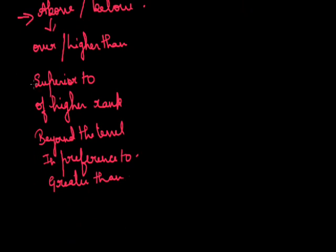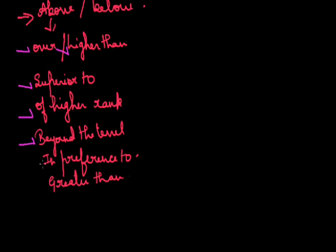For example, for superior to: 'Sudhir placed his country above his family ties' — meaning he gives more value to his country than his family. For higher rank: 'An administrative officer is above a section officer.' For beyond the level or reach of: 'He was above suspicion of all' — meaning no one could suspect him.